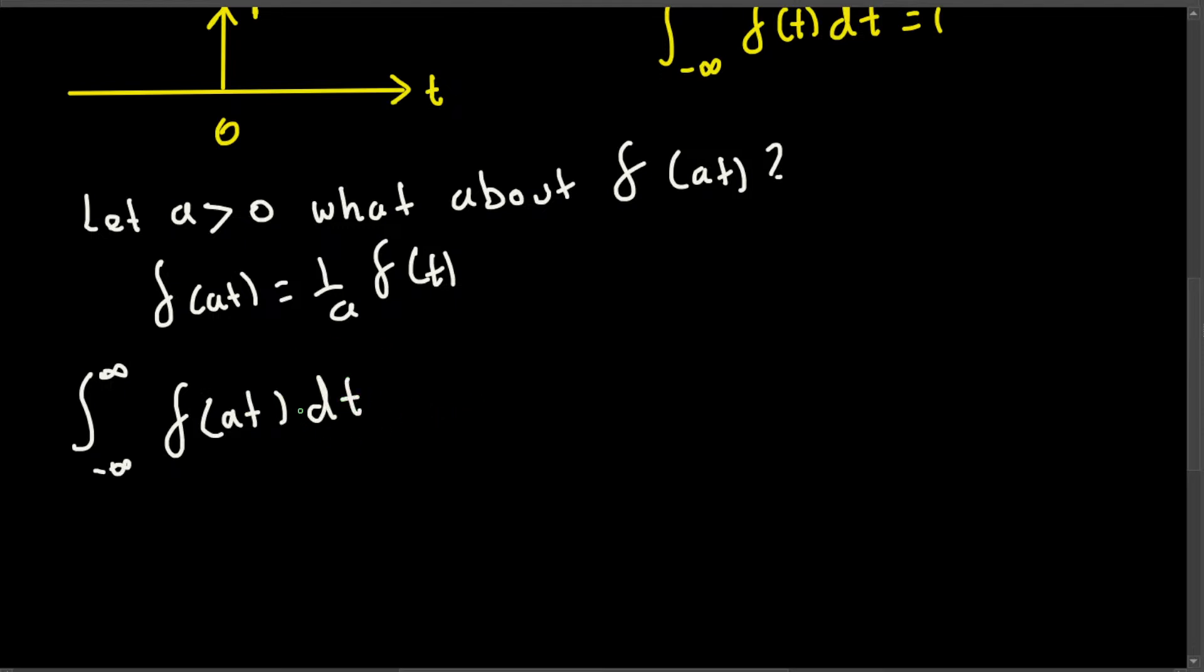Now to do the integration I want to make this one variable, so I'm going to equate at to tau. If I equate at to tau, then d tau becomes a dt.